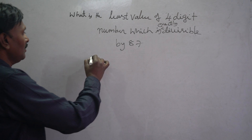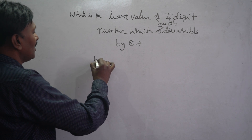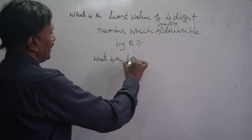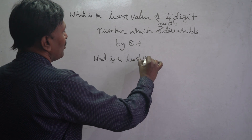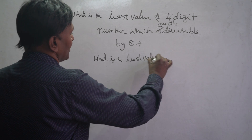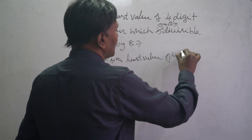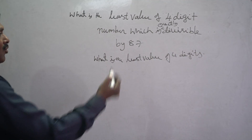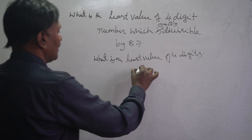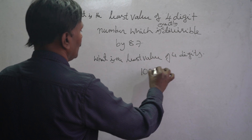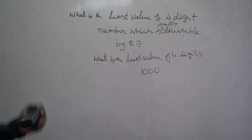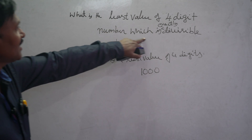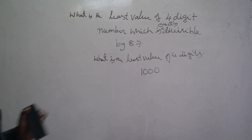First of all, what is the least value of four digits? The least value of a four-digit number is one thousand. So what is the least value of a four-digit number which is exactly divisible by 87?